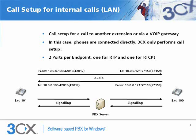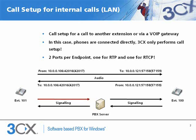In this example, extension 101 wants to talk to extension 100. To do this it will first contact the SIP server — in the image it's called PBX server, same thing — and ask for the call to be set up. The SIP server will contact extension 100 and set up the call.